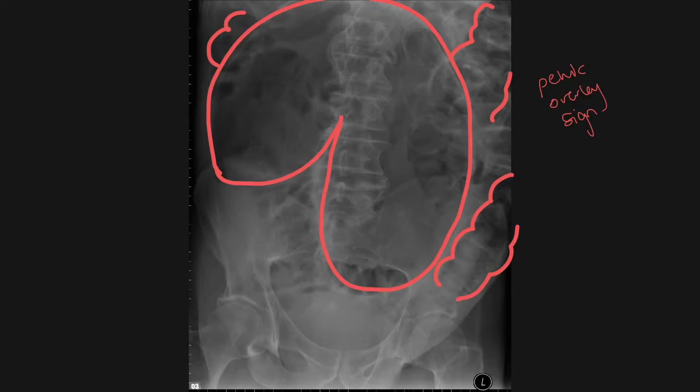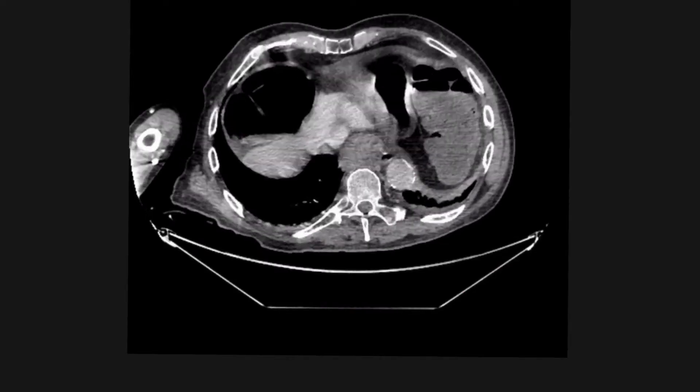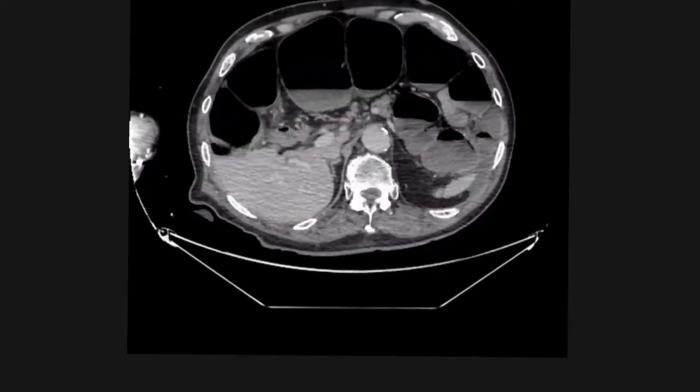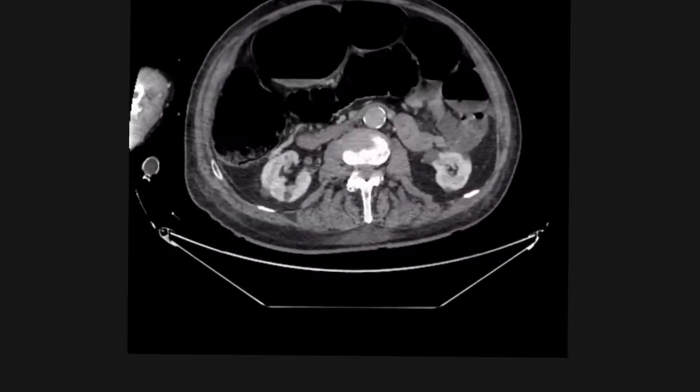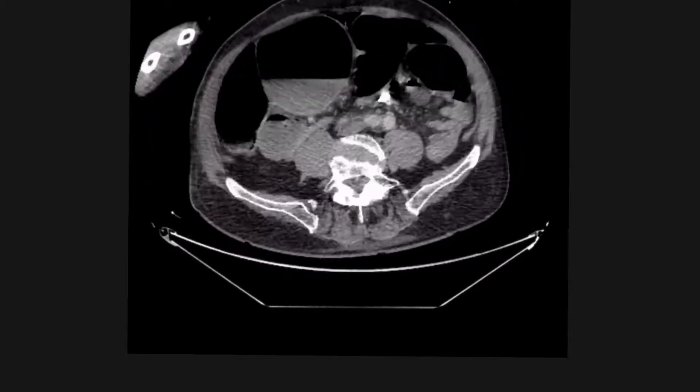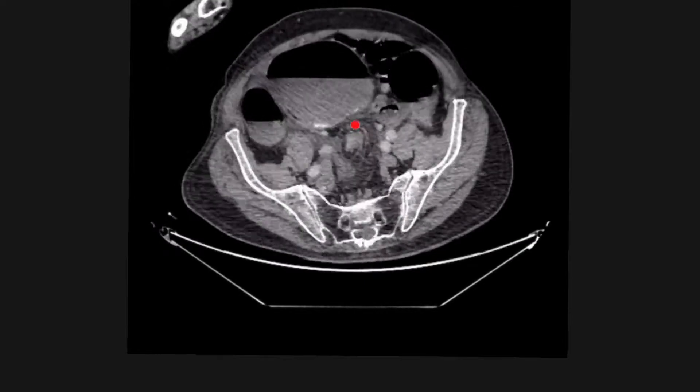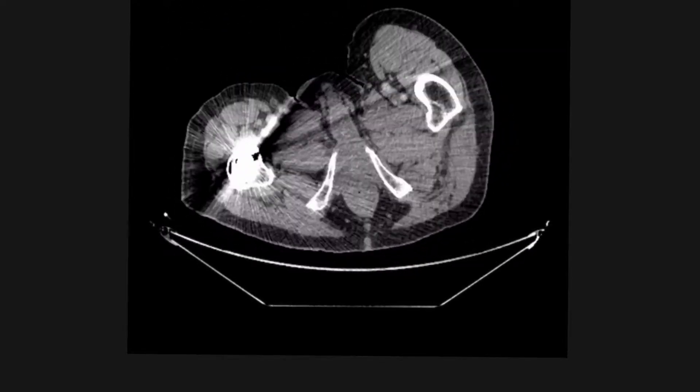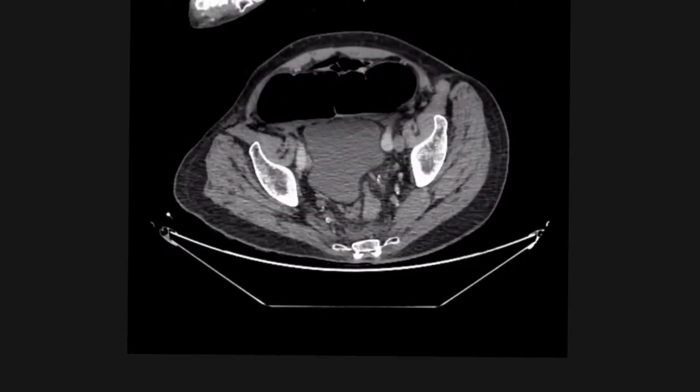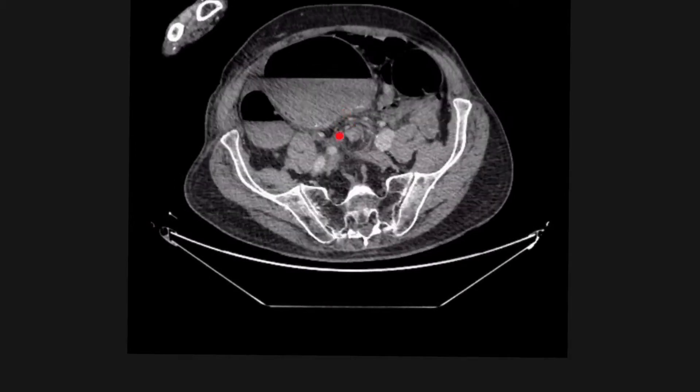However, sometimes you can't tell on x-ray, and you need to do a CT. So if we look at these axial slices on the CT abdomen, we can see all this dilated large bowel. And again, we're looking for twist, and there is the twist, which is in the sigmoid colon. There it is again.